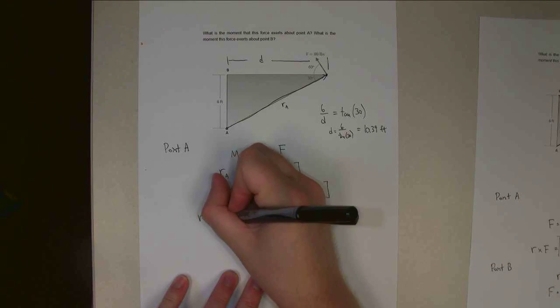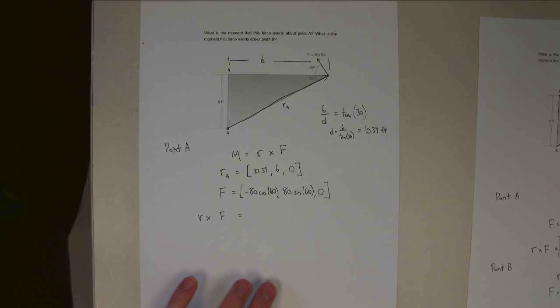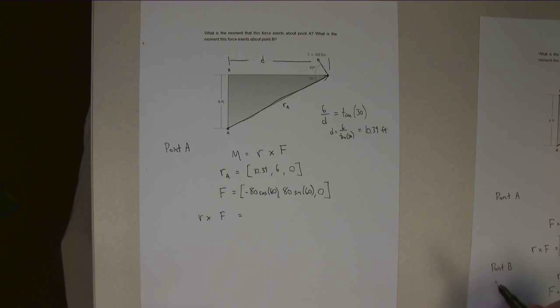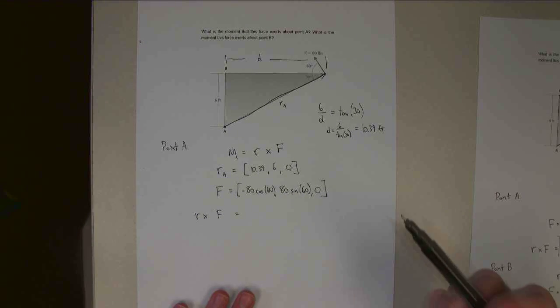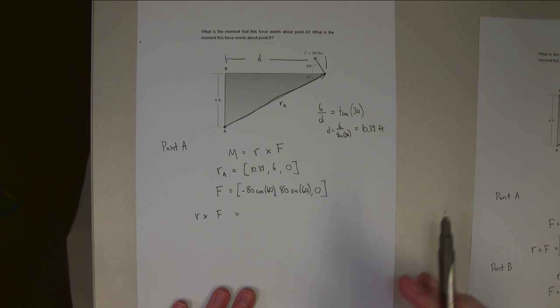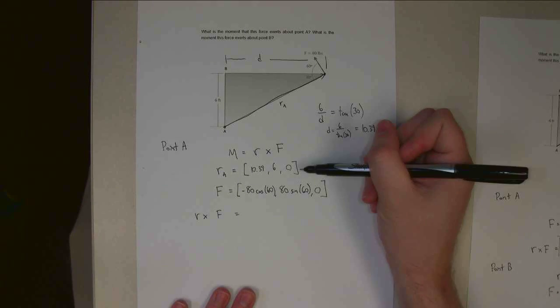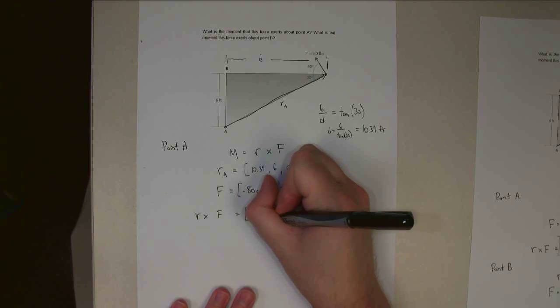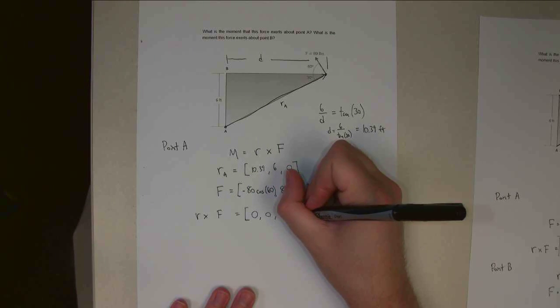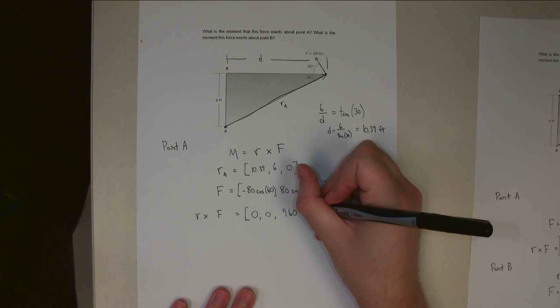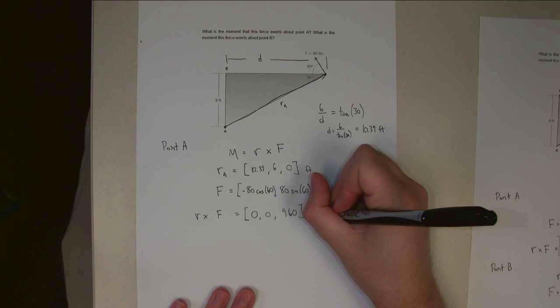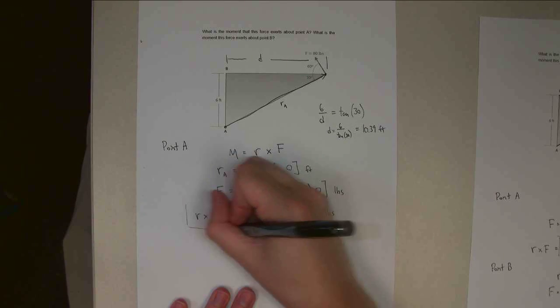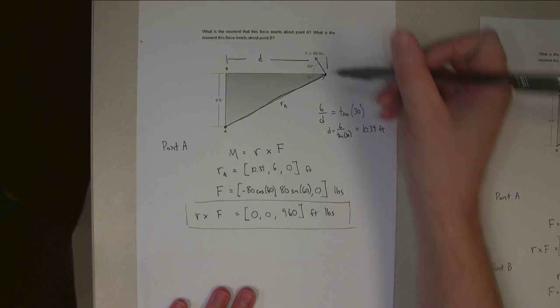So R cross F. And there's a number of different things we can do to calculate this. We can do the cross product by hand, which is not something I would recommend on a regular basis, or we can use computer tools like Matlab or the Wolfram online vector operation calculator. And if we plug in R cross F, we should wind up with a result of 0, 0, 960. The units, these units up here are feet, these are pounds, and so the units of my moment vector in the end is going to be foot pounds. So this is the moment that this force exerts about point A.